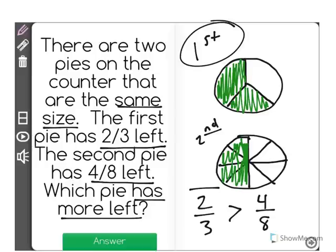Whenever you're comparing fractions, it's always smart to draw pictures to represent. As we can see here, the first pie has more of its space shaded in than the second pie. Which means that there's more of the pie left.